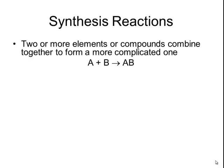The letters A and B may be single elements or they might be simple compounds. But the product of the reaction, AB combined, is a more complicated form of the elements that started the reaction.